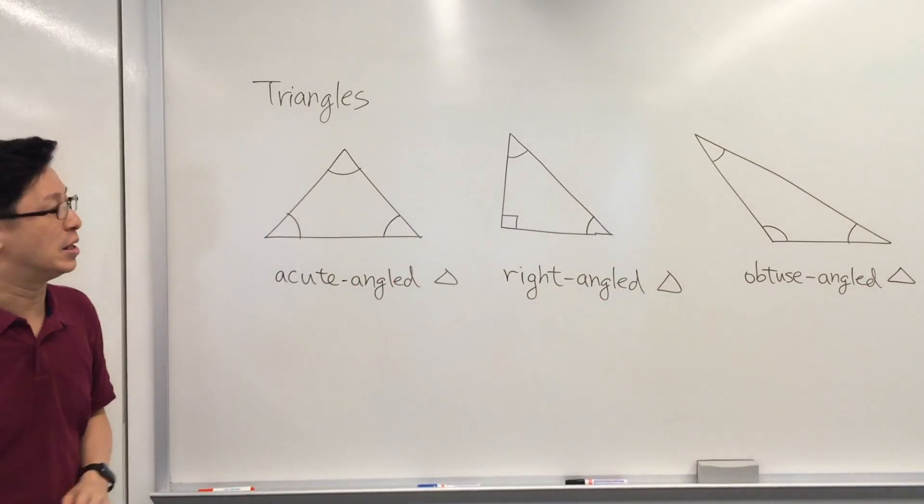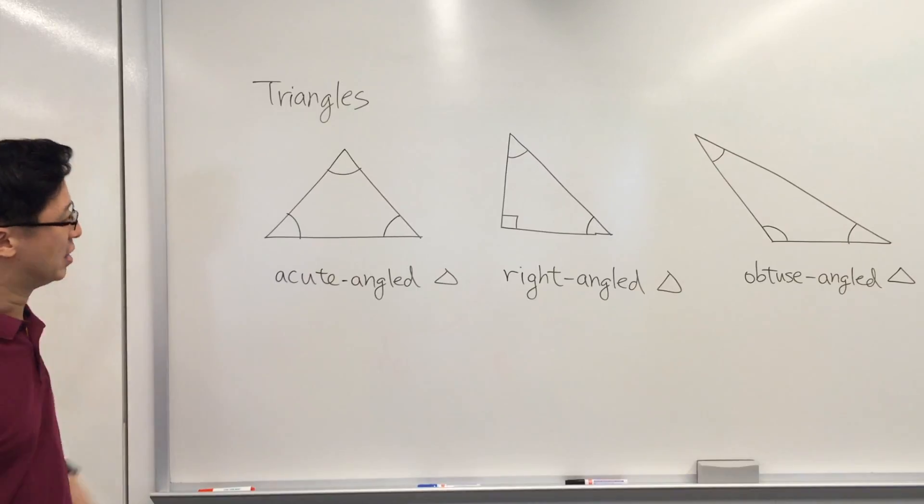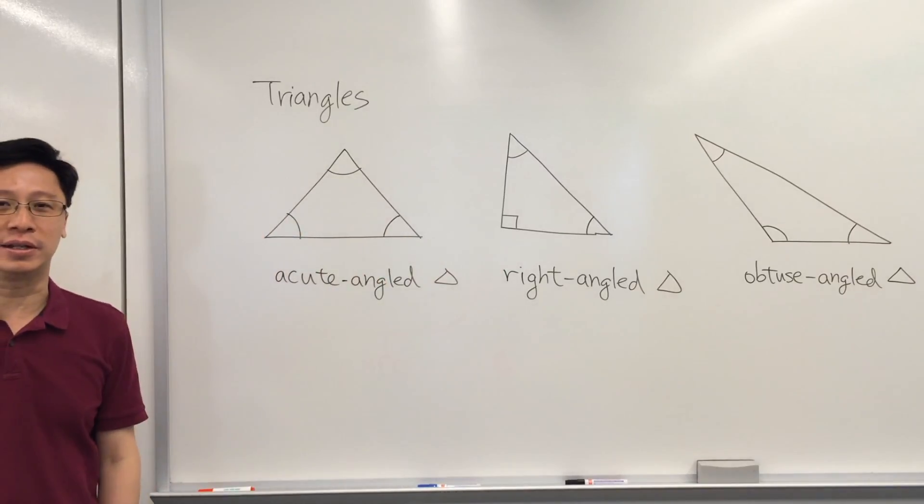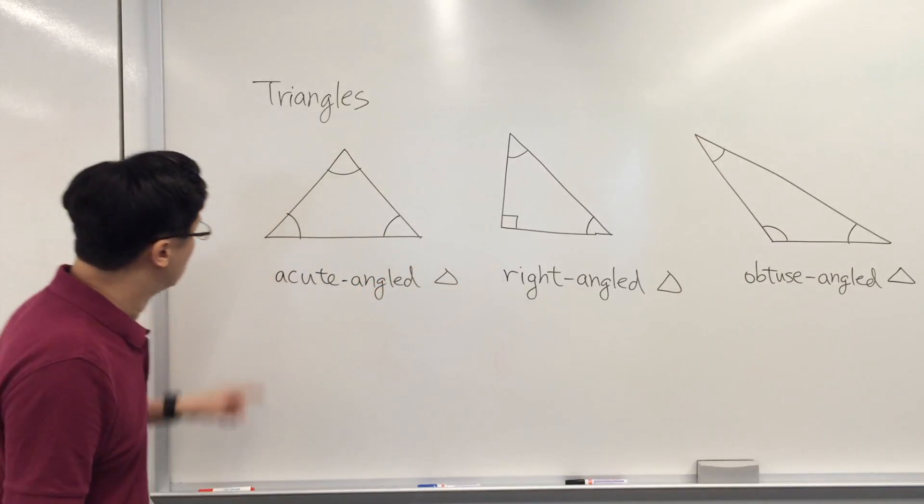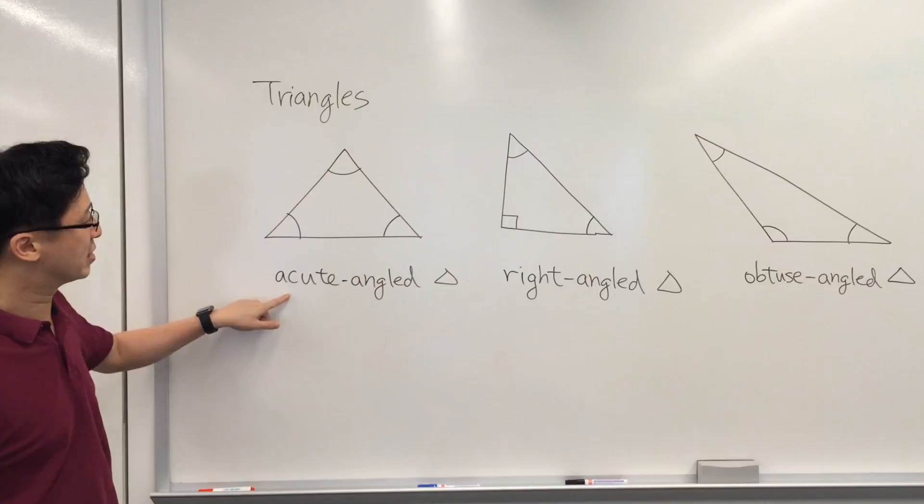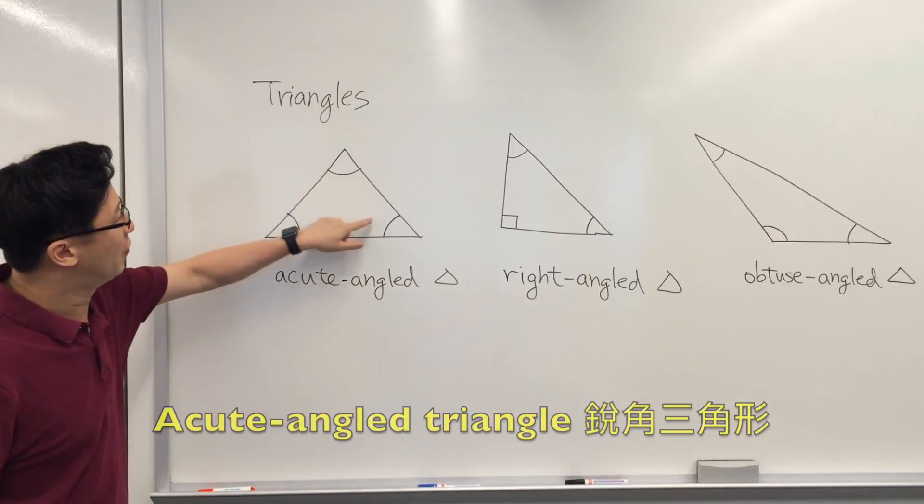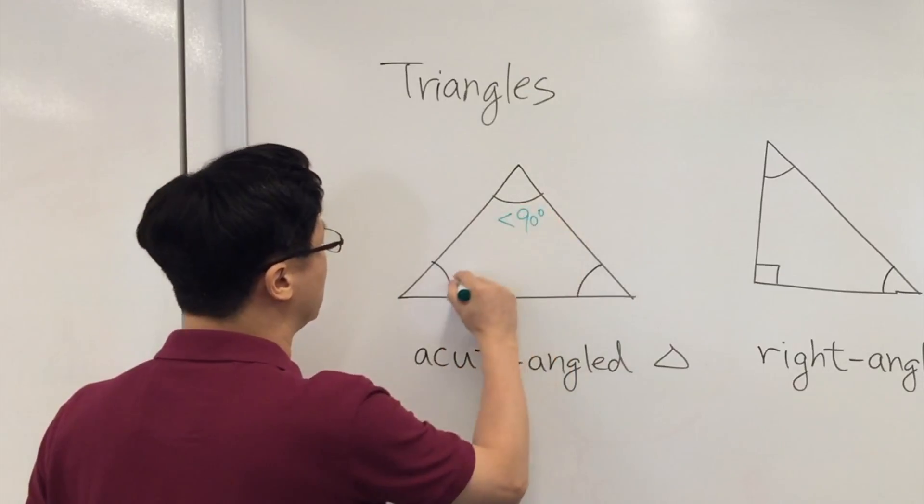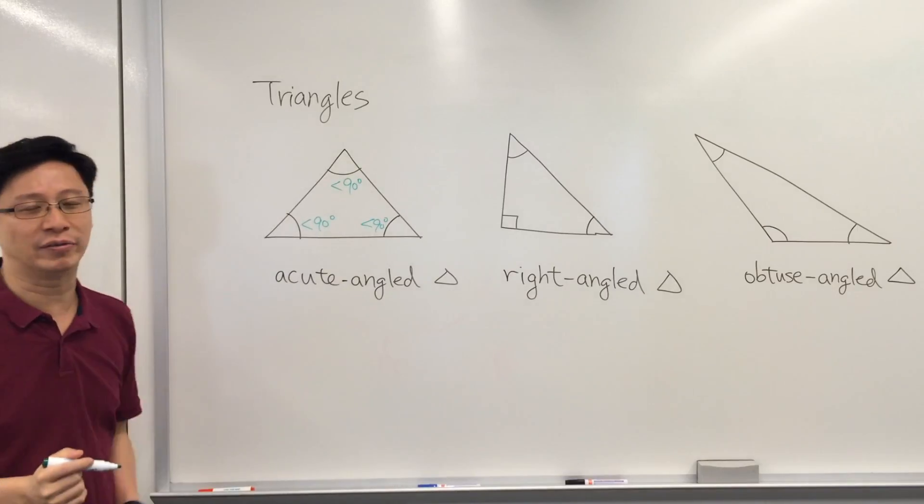The second way to classify triangles is by the size of the angles. We always check whether the angle is greater than, smaller than, or equal to 90 degrees. The first one is an acute-angled triangle because all three angles are less than 90 degrees—they are all acute angles.